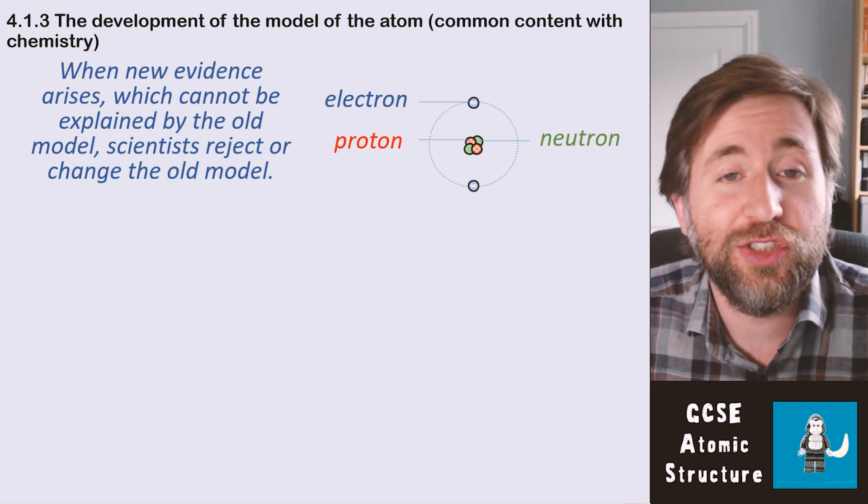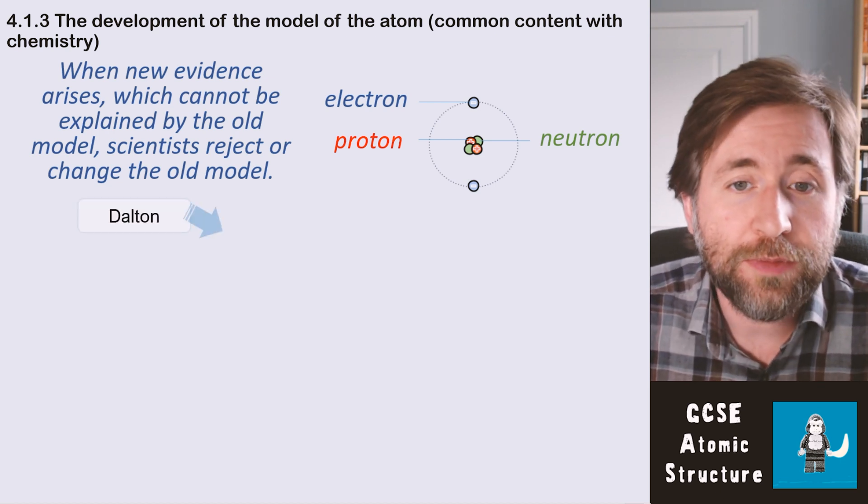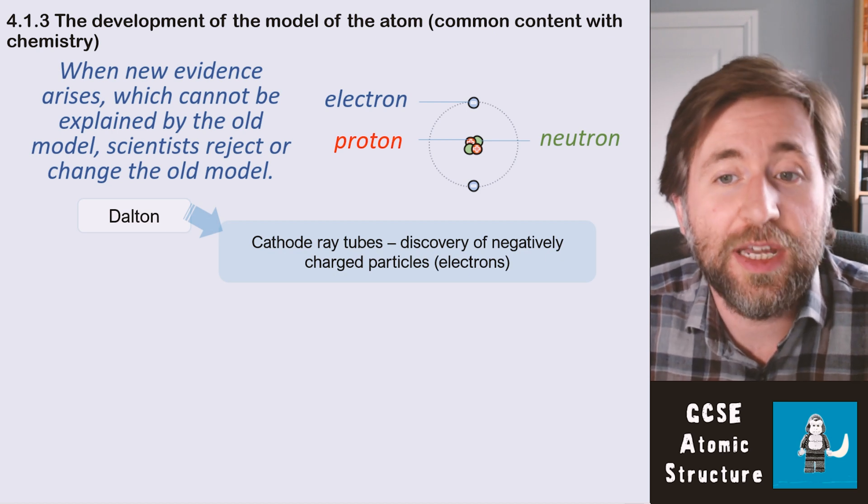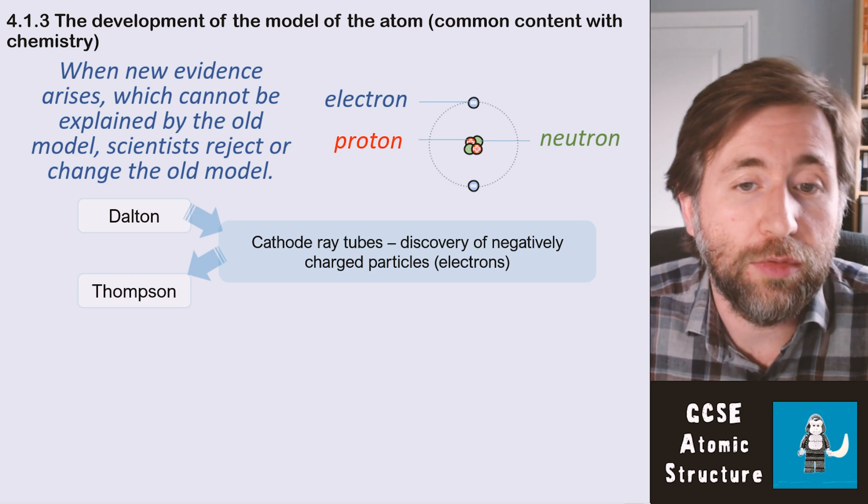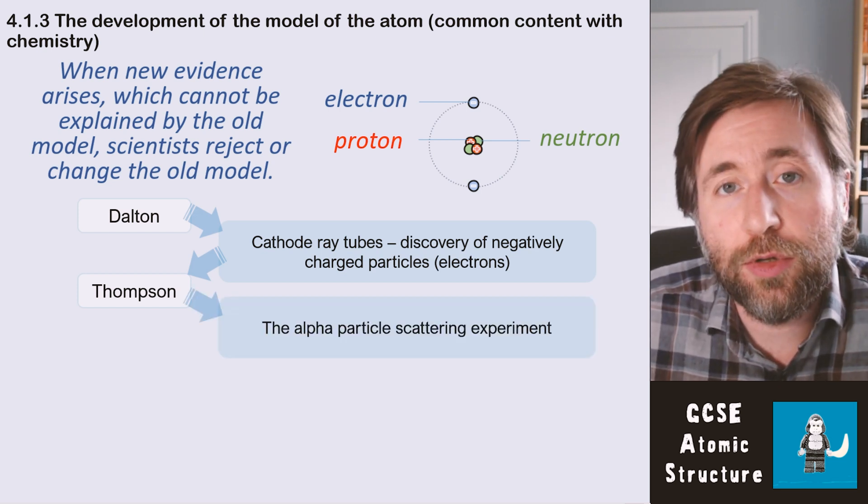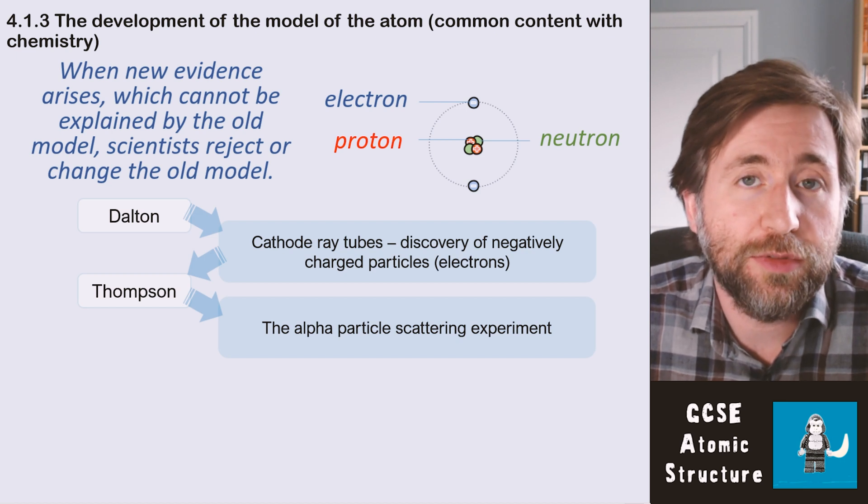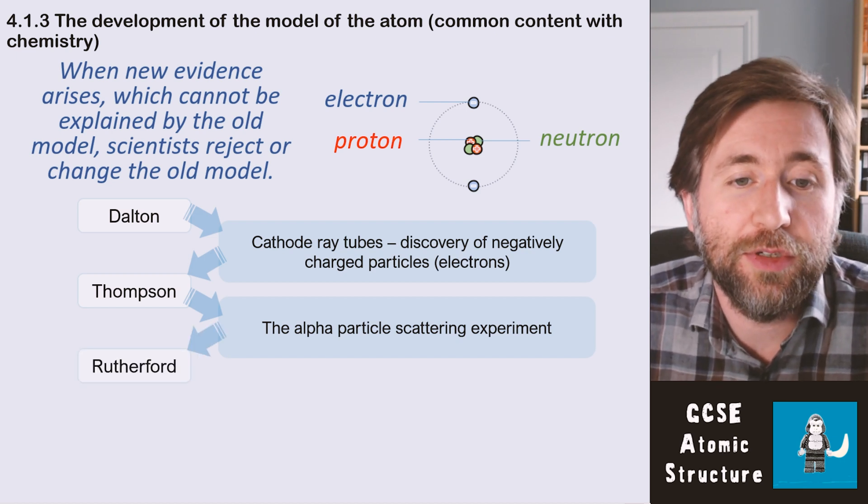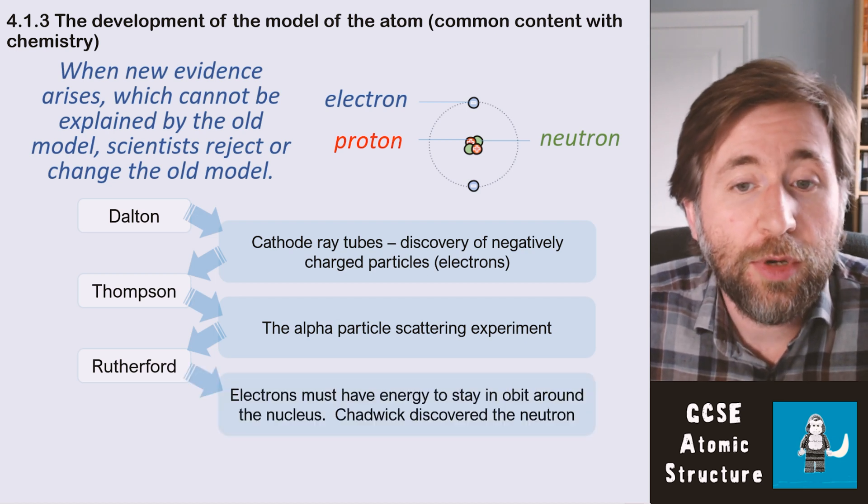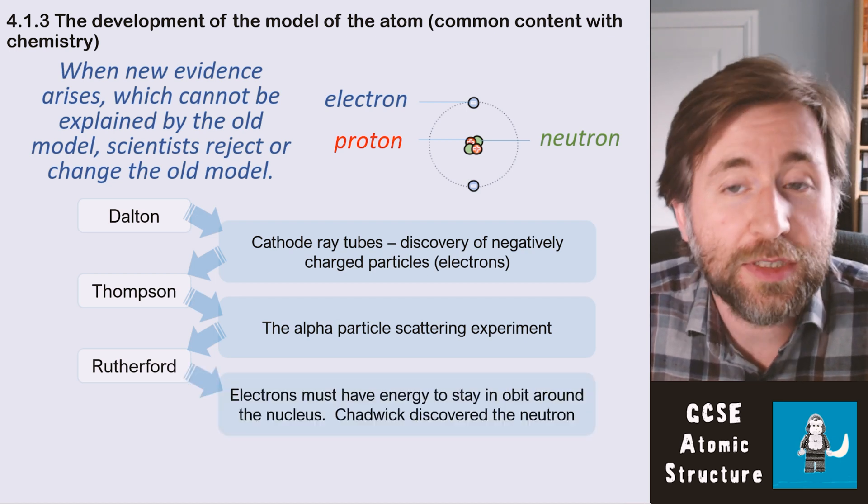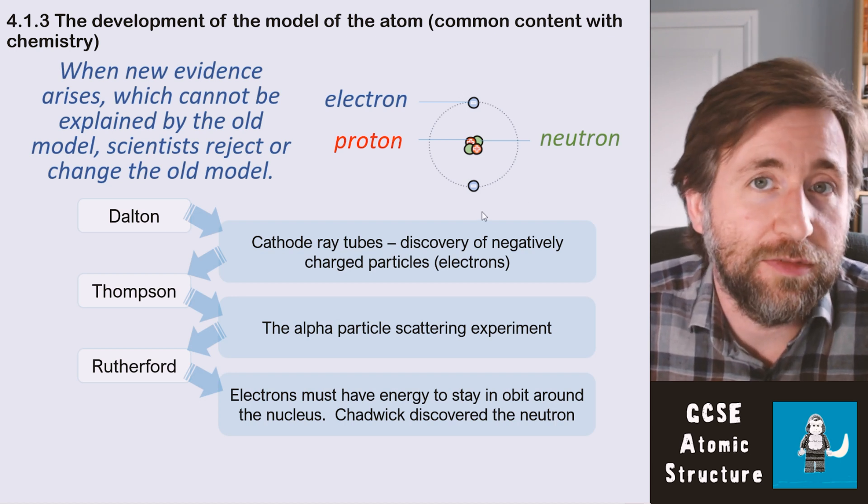It starts with Dalton, and there was evidence that actually there was another particle—cathode ray tubes, beams of electrons—that led to the Thompson model, the plum pudding model. The Thompson model was changed after the alpha particle scattering experiment, Rutherford's alpha particle scattering experiment that I've just described to you, and that led to the Rutherford nuclear model. From the Rutherford nuclear model, then we realized the electrons must have had some energy if they were to stay in orbit, so that gives rise to the energy levels. And also Chadwick discovered the neutron, and now we have the Bohr model.